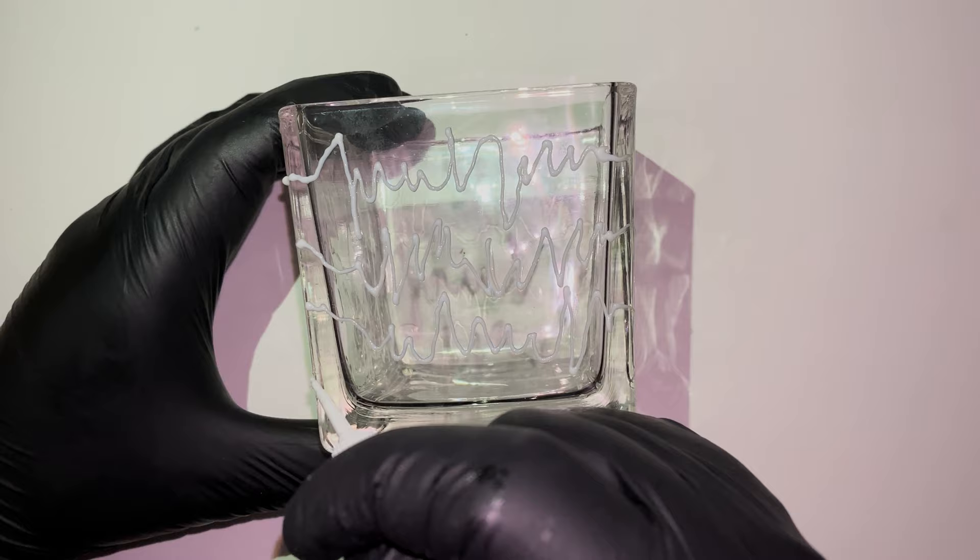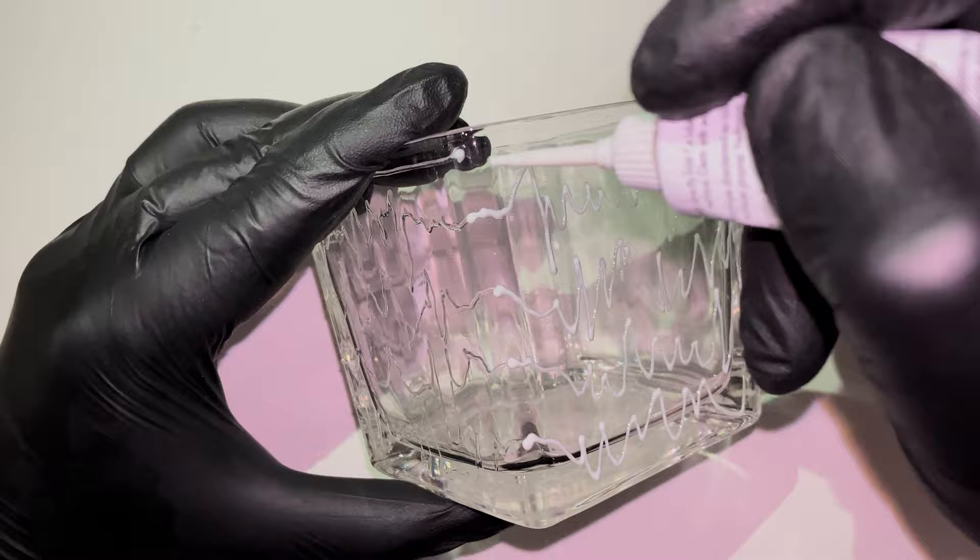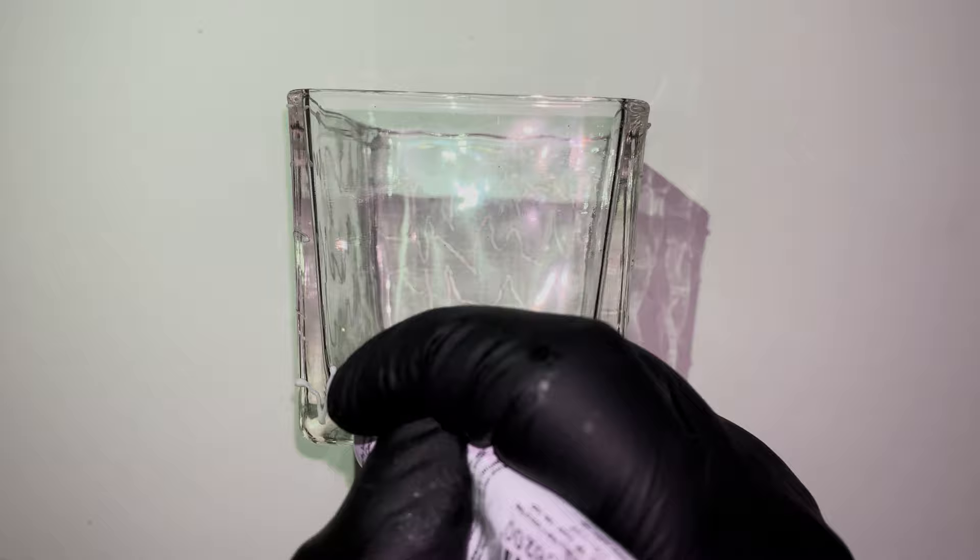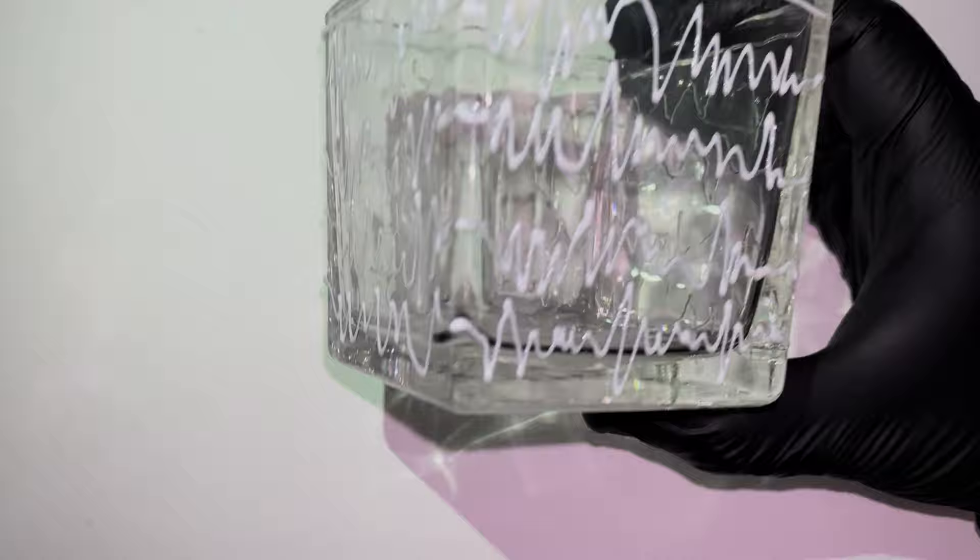We start by making the lines using a transparent outliner. You will find all the materials used in this video in the description below. For this candle holder, draw whatever lines you like. When the lines dry out, they will be transparent.